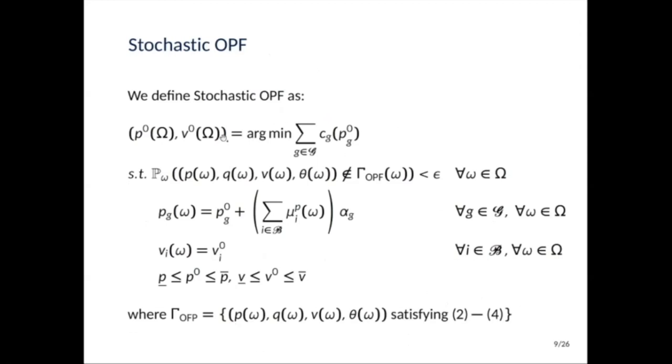So now we can write stochastic OPF. We're still trying to minimize the generation costs, but now on the nominal value. We have the equations defining the adjustment policy, and we also have bounds on our P0 and V0. And we also want our solution to satisfy the OPF equations 2 to 4 no matter what the scenario is. Since this feature is extremely hard to ensure no matter what the scenario is, we'll instead say that the probability of not satisfying the OPF constraints is lower than a certain epsilon that is small.